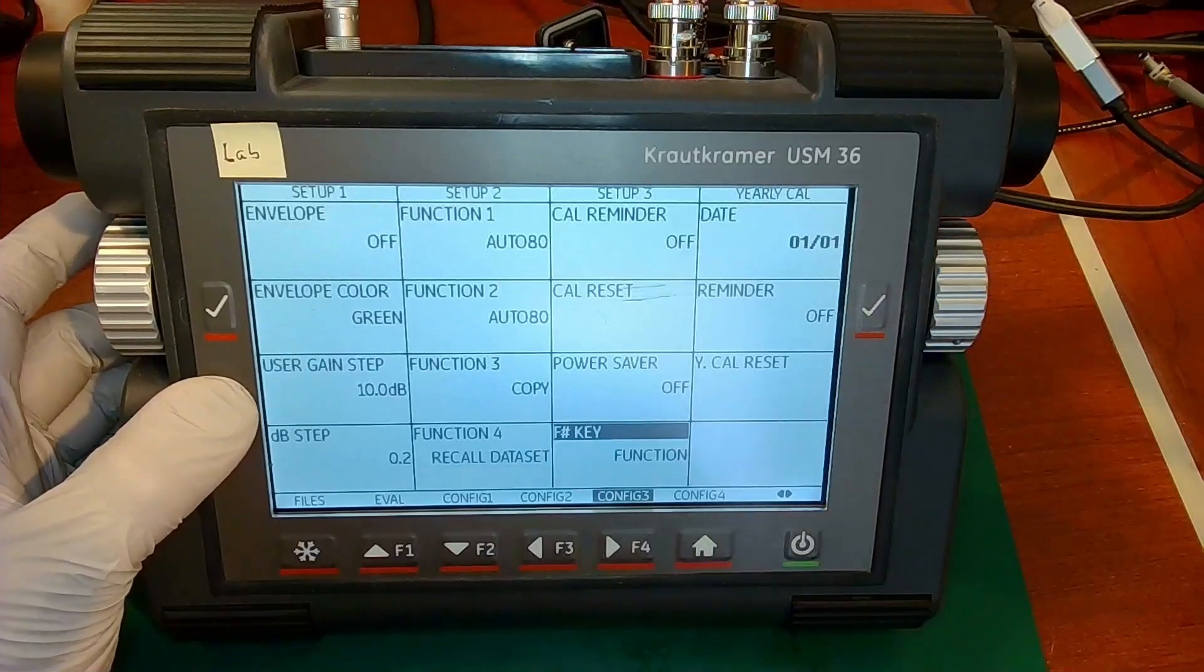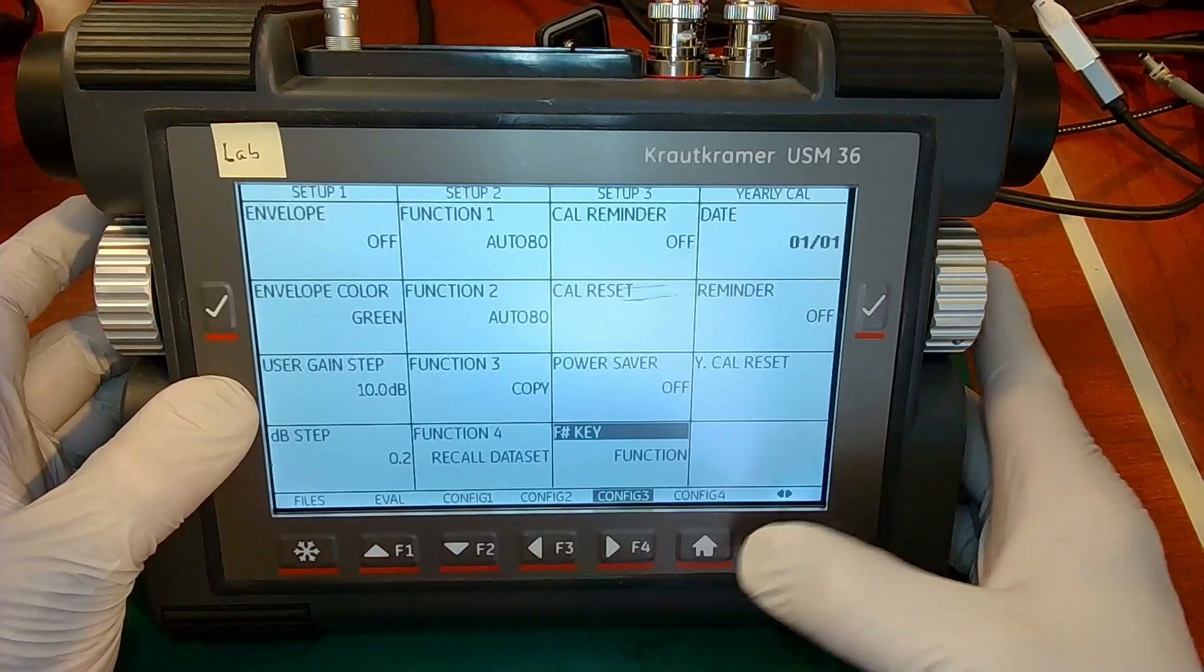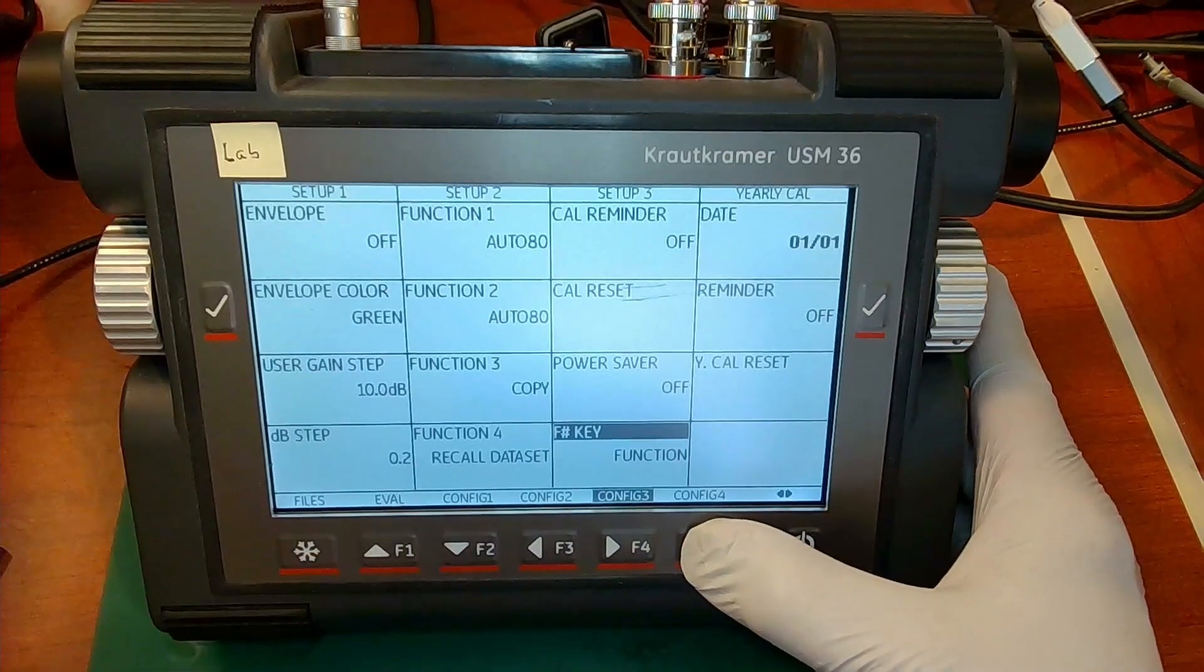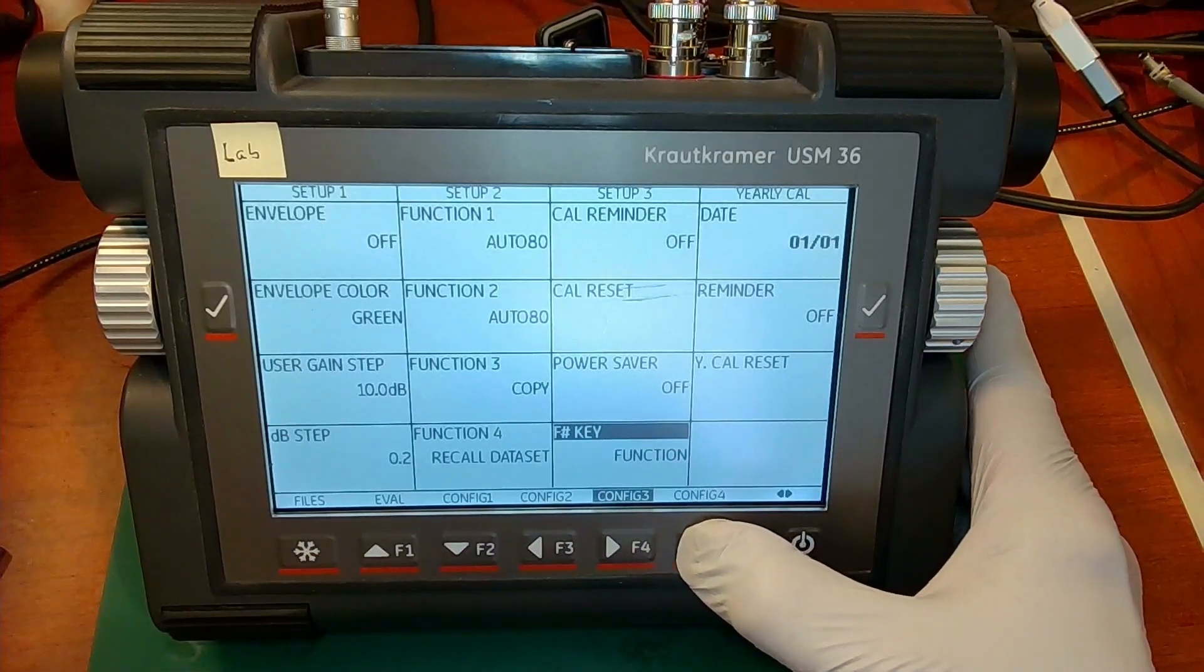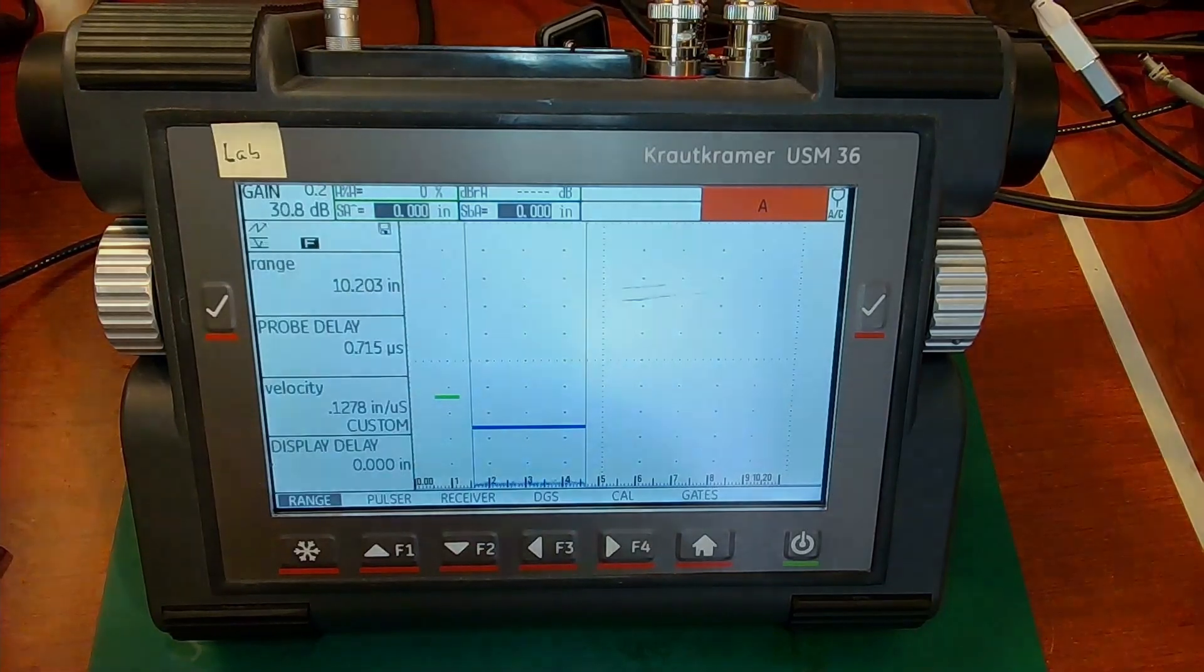And then to get back out to the main screen, just like we did a long press on home button to come into these back menus, we do a long press on the home key to come back out. All right. And that's the basic operation of the USM 36. Again, I'm Dan Groninger for Waygate Technologies. Thank you for joining me.